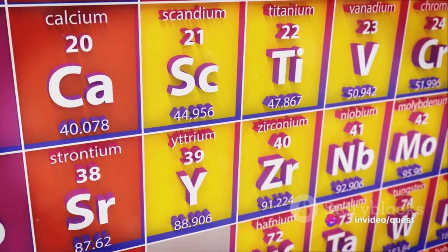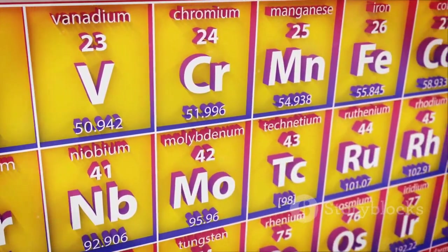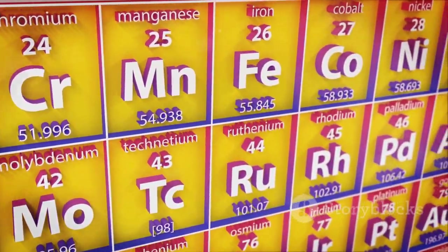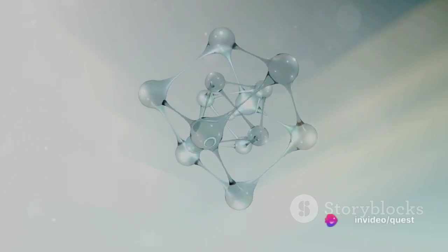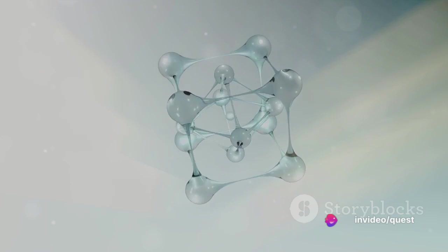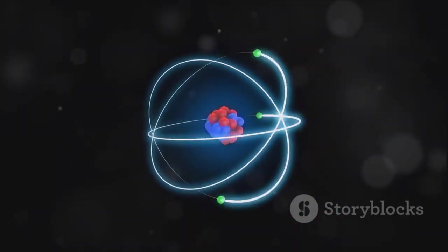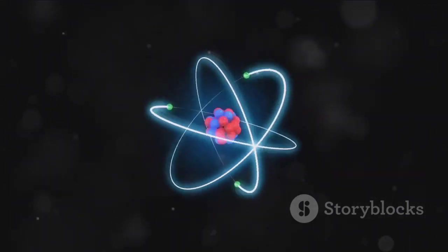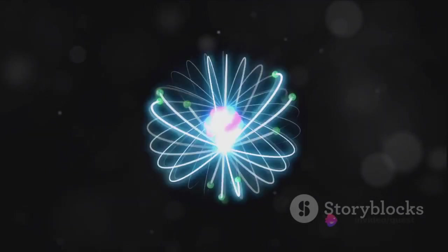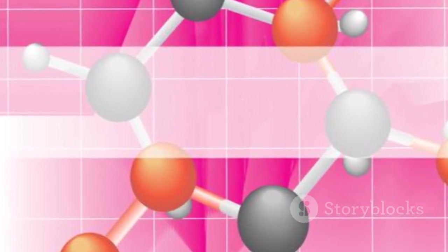Now, you may wonder how many space groups are there? Well, there are exactly 230 unique space groups. Each one of these represents a unique way of arranging atoms in a crystal, and they are all catalogued in the international tables for crystallography. So, how do we use space groups? Once we know the space group of a crystal, we can determine its structure. We can figure out where the atoms are, how they're bonded and what shape the crystal should be. This information is crucial for understanding the physical and chemical properties of the crystal.